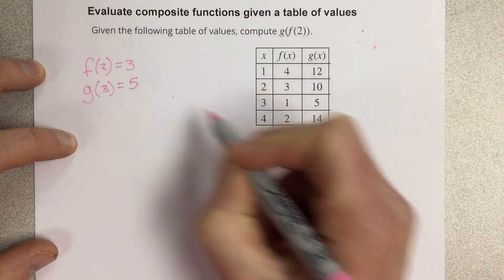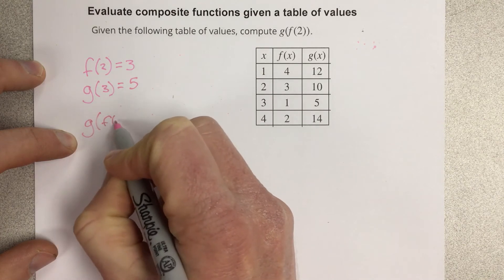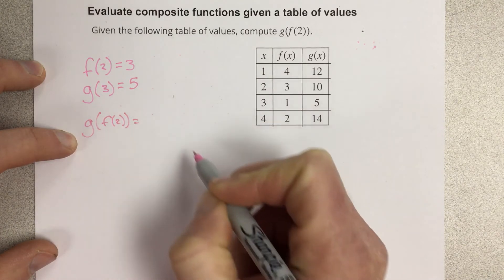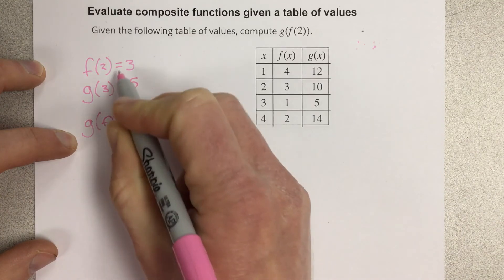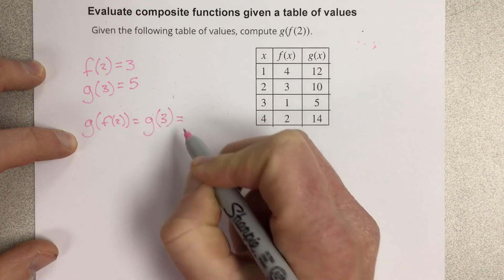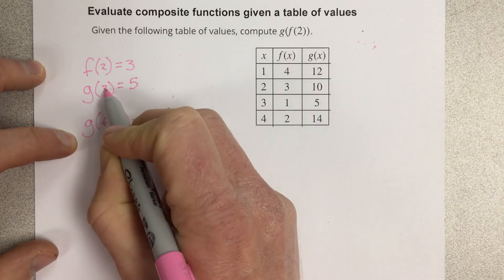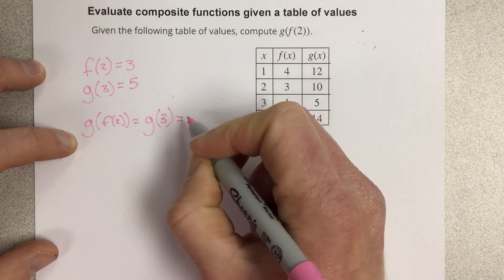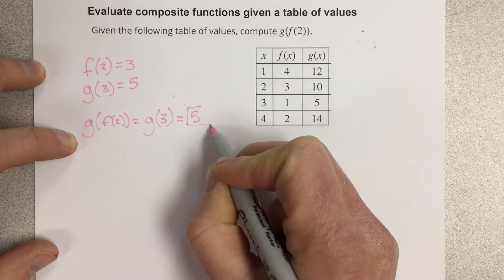So let's tie this all together. What that's really saying is if I have g of f of 2, that means that I have g with f of 2 gives you an output of 3, so that's g of 3, which then this is your input, and with an input of 3 for the g function, you get 5. So g of f of 2 is actually just equal to 5.